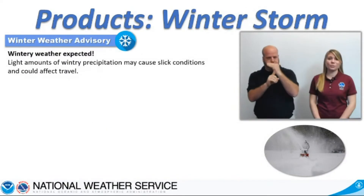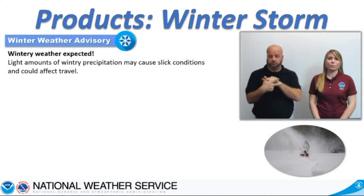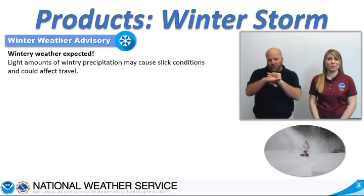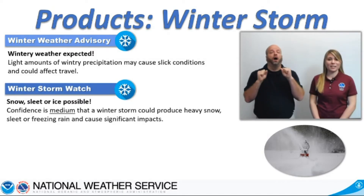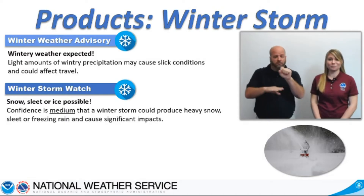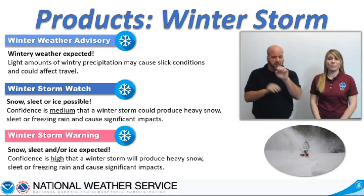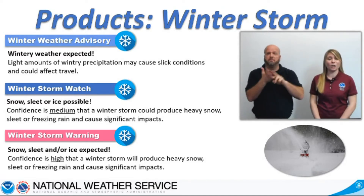There are three types of alerts for winter weather precipitation. A winter weather advisory means that light amounts of snow, sleet or ice could cause minor impacts. A winter storm watch means that significant impacts from high amounts of snow, sleet or ice are possible. A winter storm warning means that significant impacts from high amounts of snow, sleet or ice are expected.